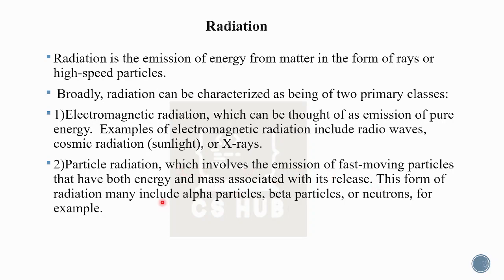Particle radiation includes alpha particles, beta particles, and neutrons. Radiation is an emission of energy from matter in the form of rays or high-speed particles. Electromagnetic radiation — rays, x-rays, cosmic sunlight, radio waves, infrared — is pure energy. Particle radiation involves energy plus mass associated with high-speed particles: alpha particles, beta particles, neutrons, and electrons.